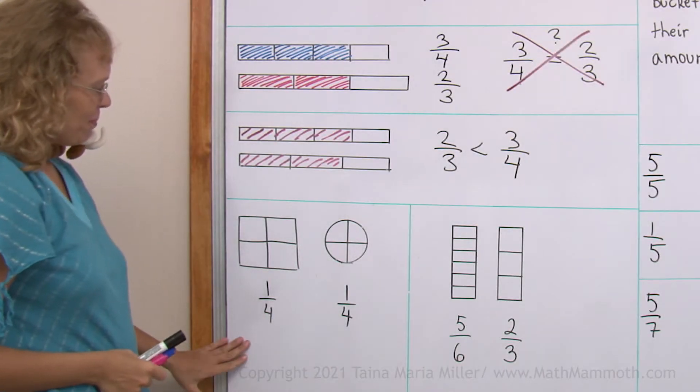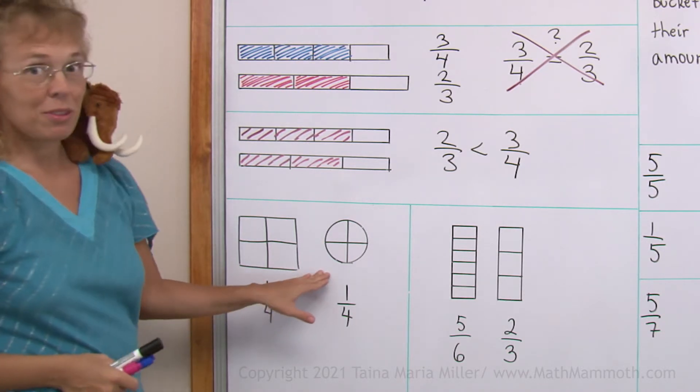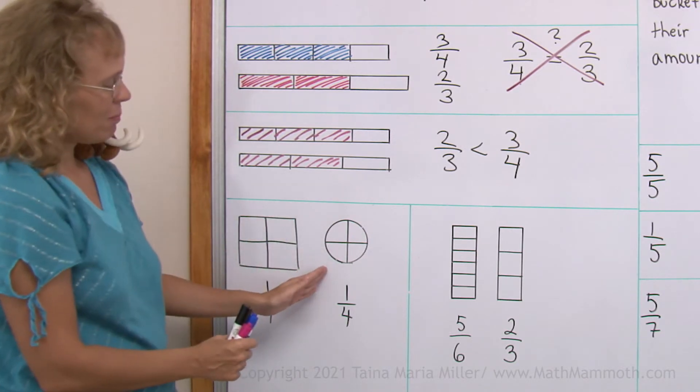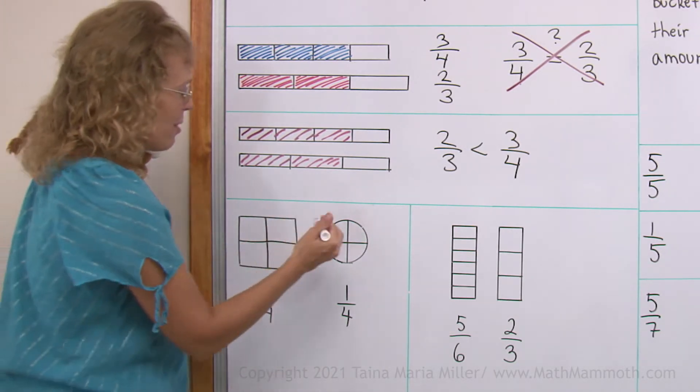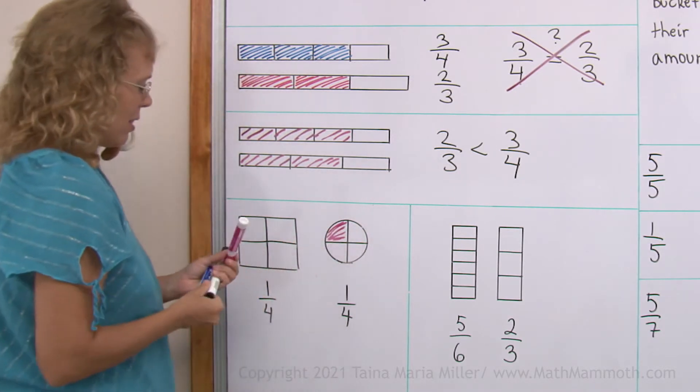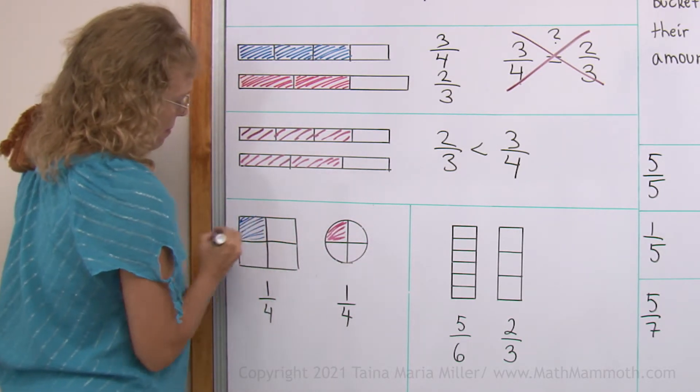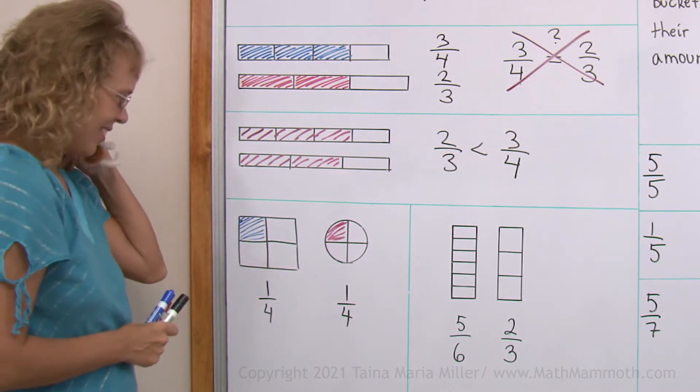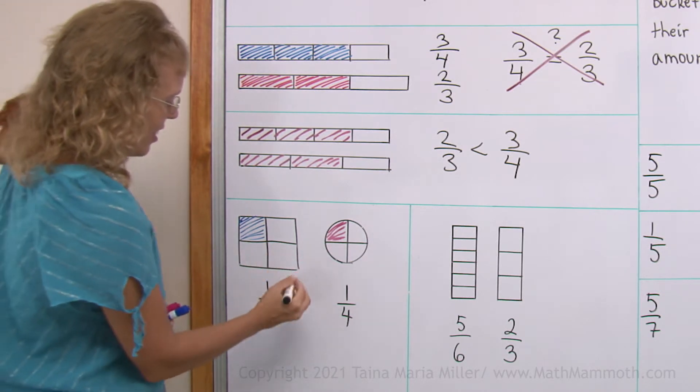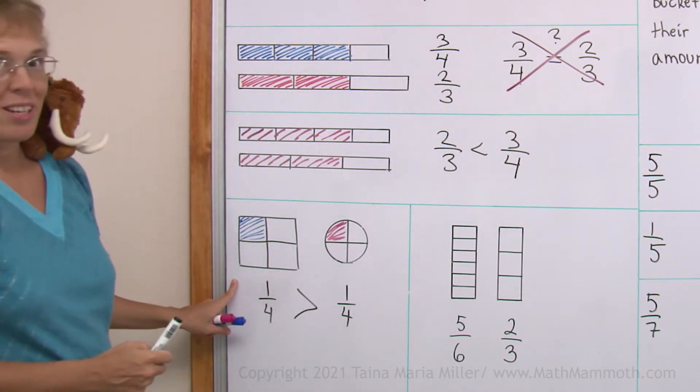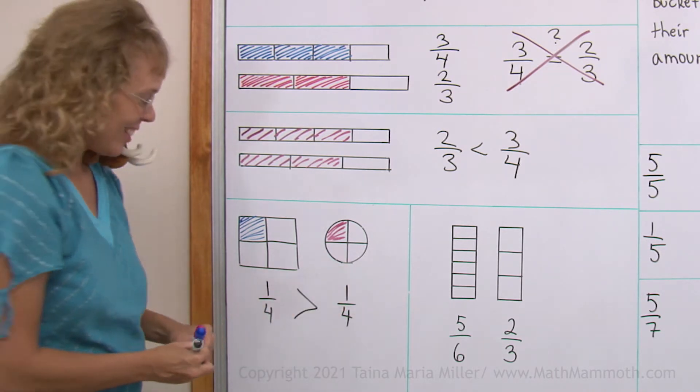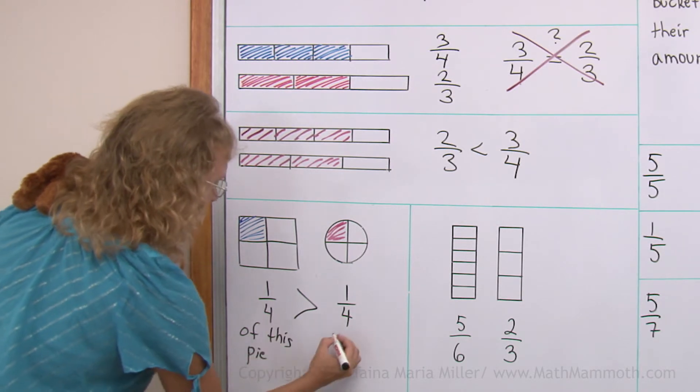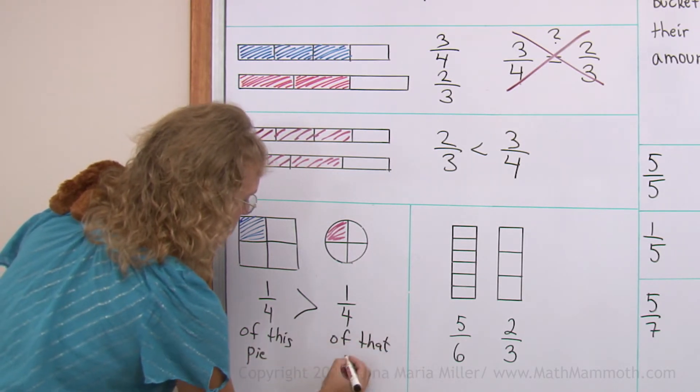Let's go over here if I color one-fourth of this and one-fourth of that. Let's say this was a square pie and this was a round strawberry pie. And maybe this is a blueberry pie. Then, which piece is the bigger piece? Oh, Mathie knows, yeah, it's this piece. So one-fourth of this pie is more than one-fourth of that pie.